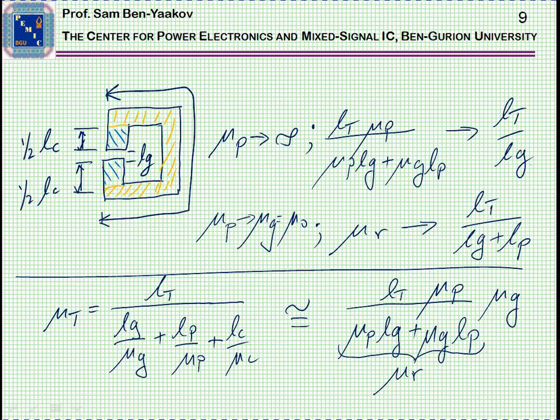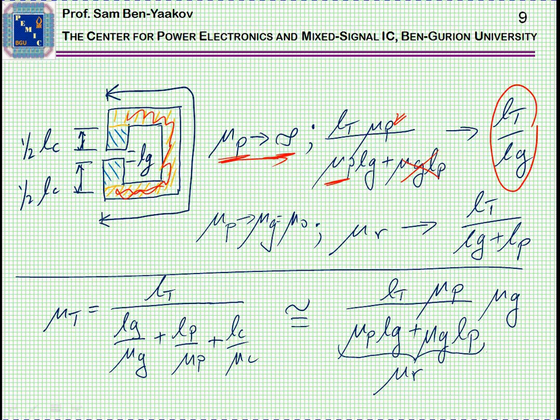Let's first of all assume that we are unbiased. That is, the permeability of this part here is very high and goes to infinity. In this case, this number is very large, so this one is really small, can be neglected. We get this value, which is Lt over Lg. That is, the relative permeability will be equal to the total magnetic path length divided by the length of the air gap.